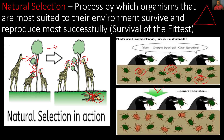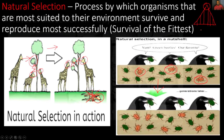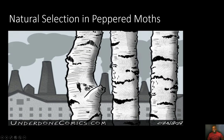An everyday analogy for natural selection: not everyone from ninth grade makes it to tenth grade, not everyone from tenth makes it to eleventh, and not everyone from eleventh makes it to senior year. By the time you reach senior year, it truly is survival of the fittest. Now let's look at natural selection in the peppered moth population before and after the industrial revolution.